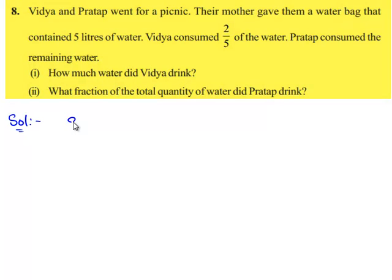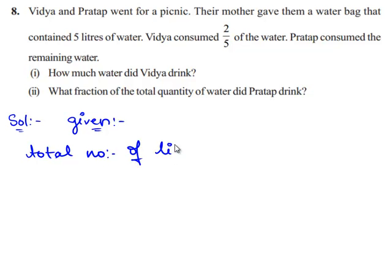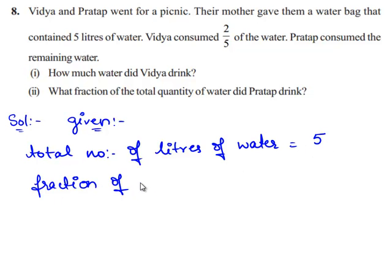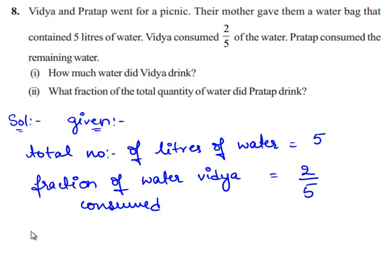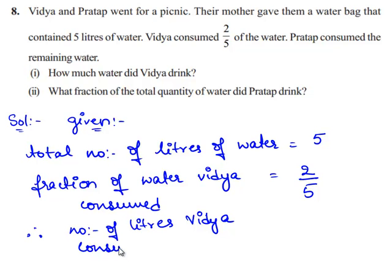So let's move on to the solution. Given total number of litres of water is equal to 5. Fraction of water Vidya consumed is equal to 2 by 5. Therefore, number of litres Vidya consumed is equal to 2 by 5 of 5.